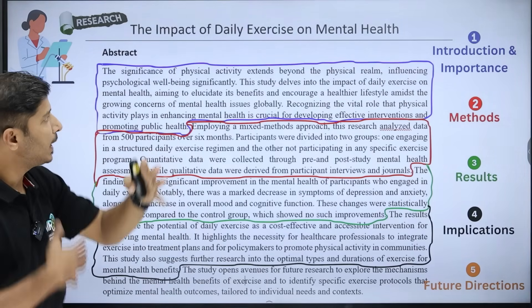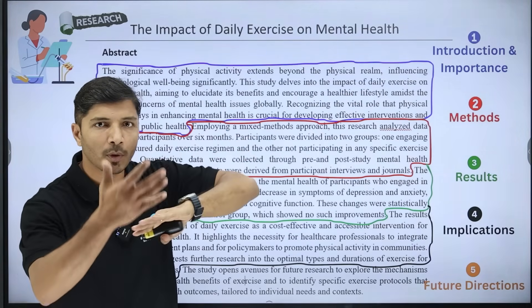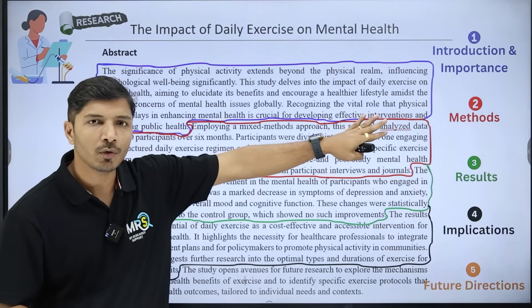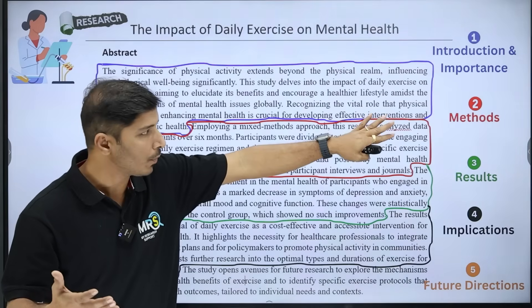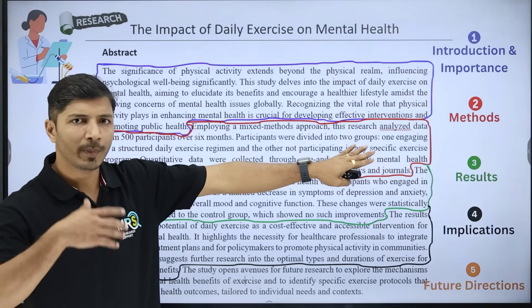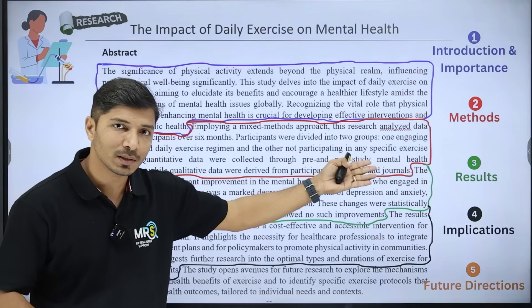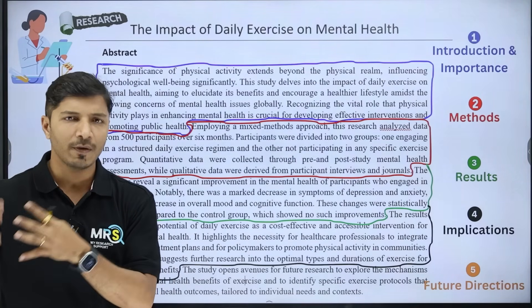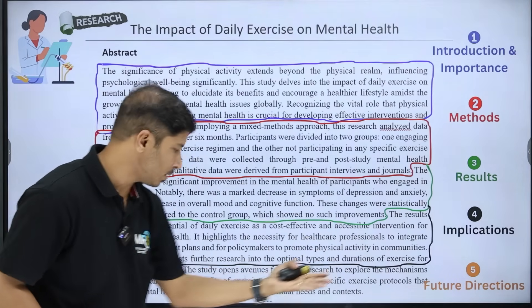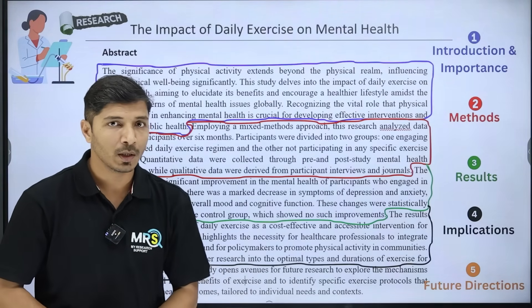I have taken one example — 'The Impact of Daily Exercise on Mental Health.' First, you have to introduce your topic and talk about its importance, maybe in one or two lines. Then include a few important methods used in data collection and data analysis. Then include one or two key results, their implications, and the effects on applications or human behaviors. Finally, in one line, talk about future directions — for example, 'the study opens avenues for future research to explore.'